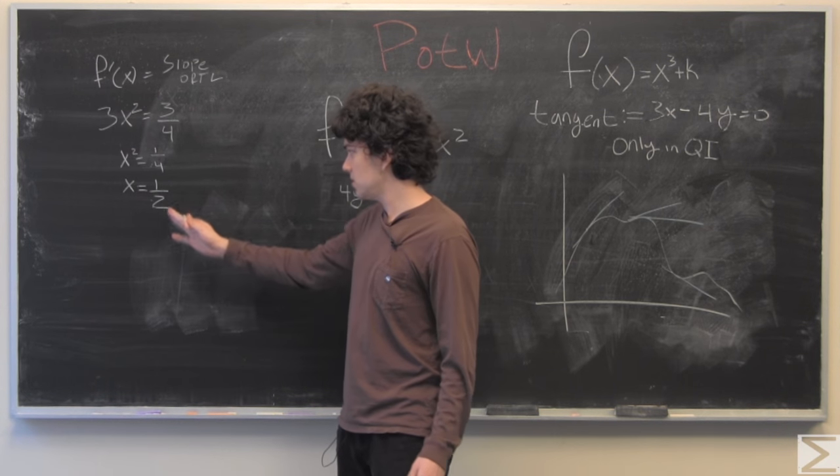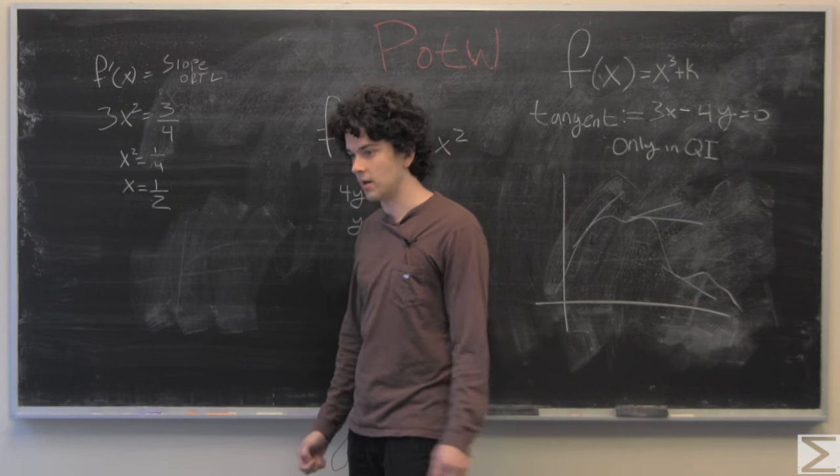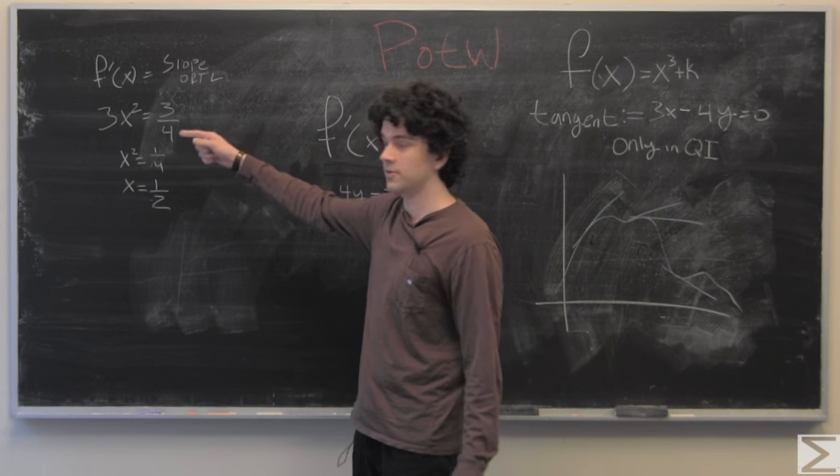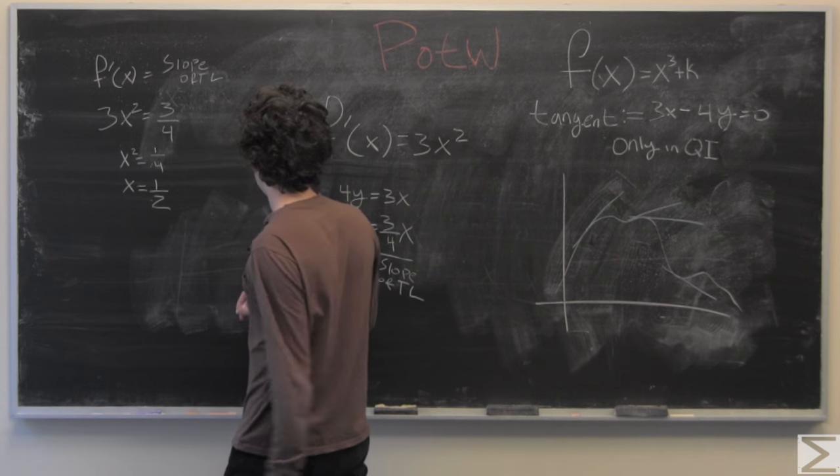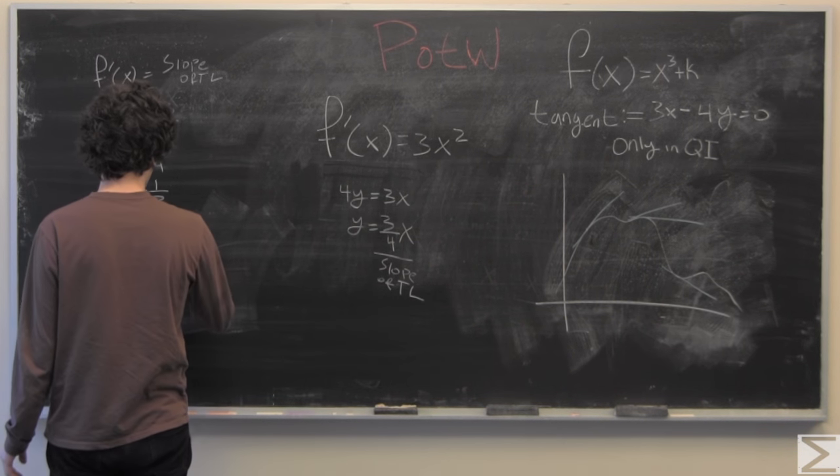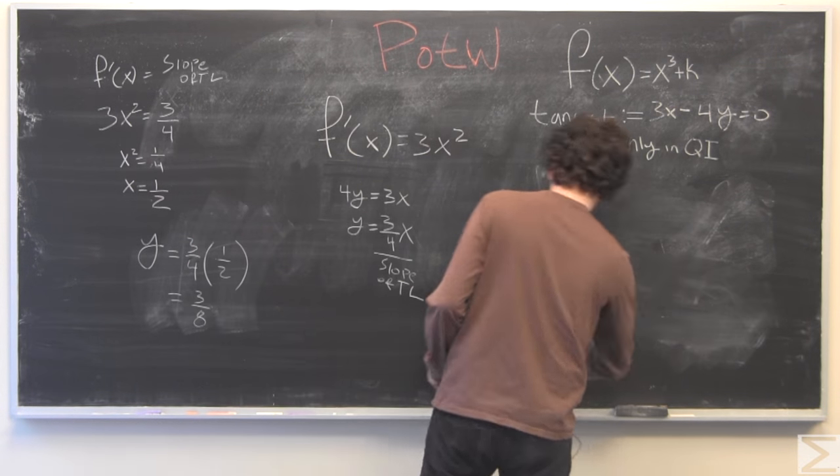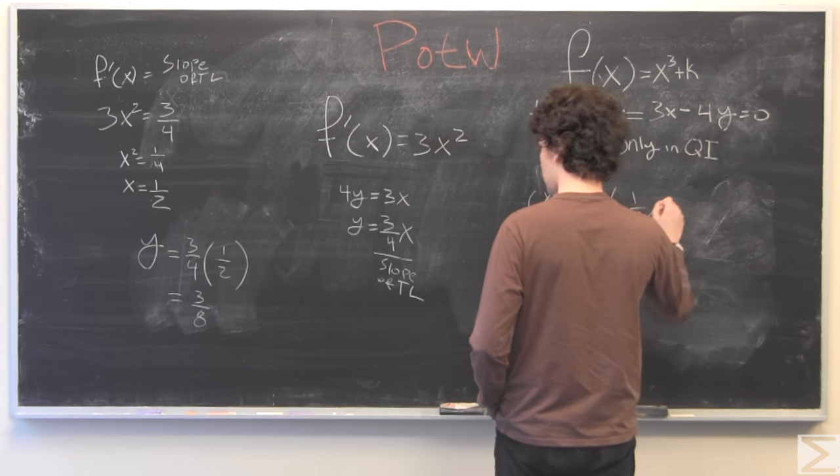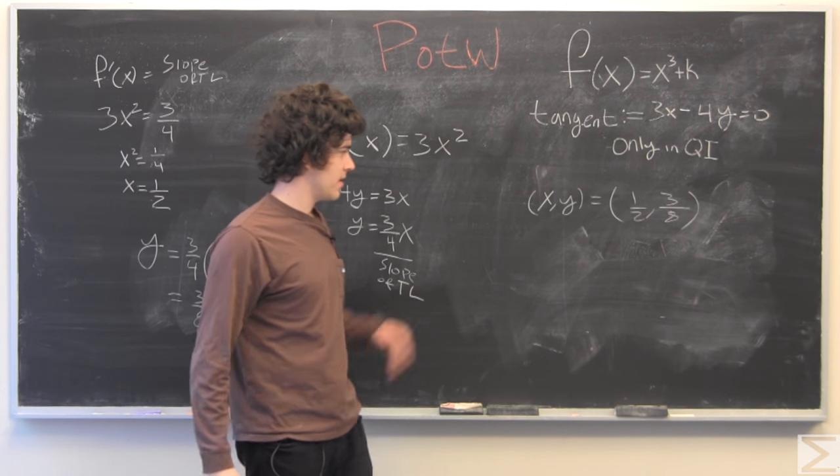Now we're going to use this information to find out the y-coordinate at that point where we set this derivative equal to the slope. We have our point.